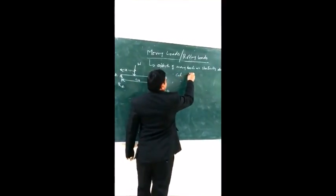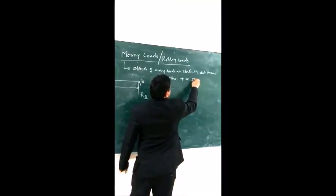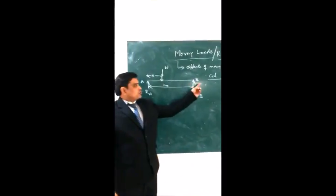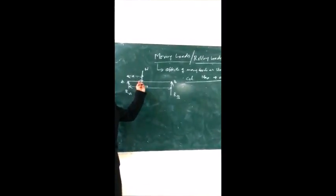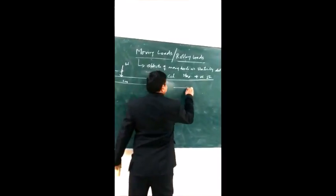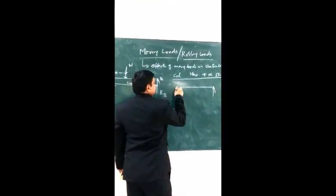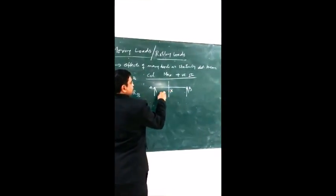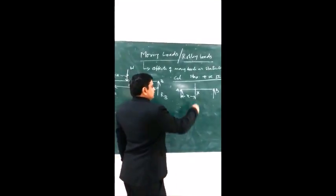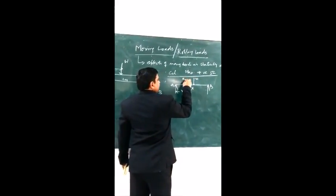We need to calculate the maximum positive shear force. This maximum positive shear force occurs when the load is between section X and B — that is, there is no load on the segment A to X. We take section X acting at a distance X from the left support, and the load should be between section X and B.